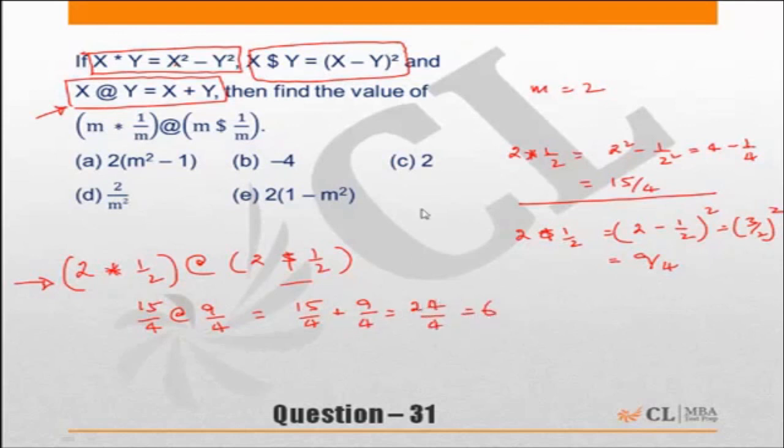Put m equal to 2 in the choices. Whichever does not give you 6 is incorrect. Whichever gives you 6 can be correct. That means straight away b is incorrect because it is giving a value of minus 4. c is incorrect, it is giving a value of 2.